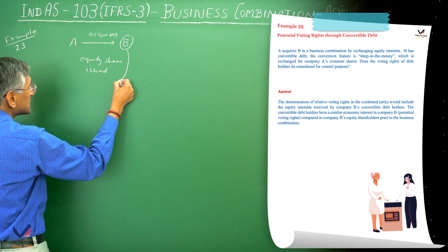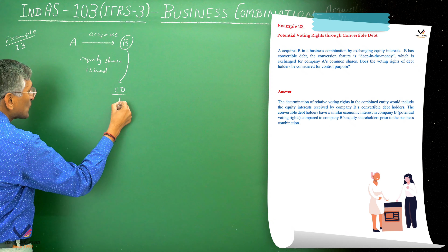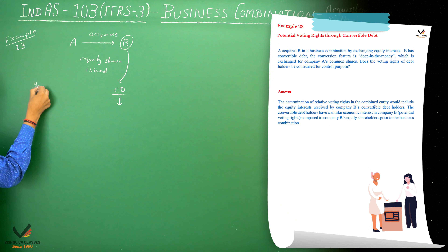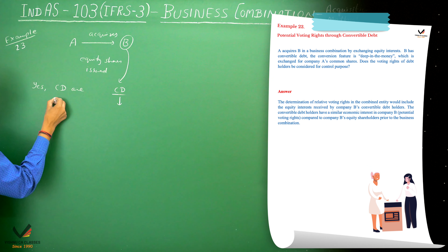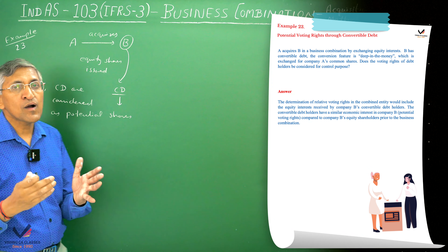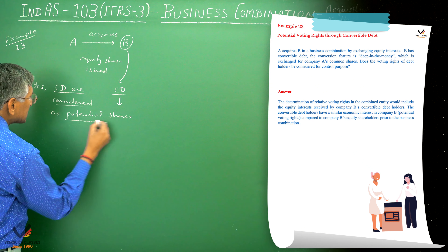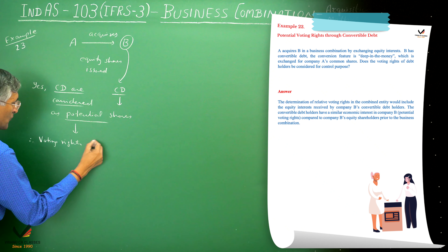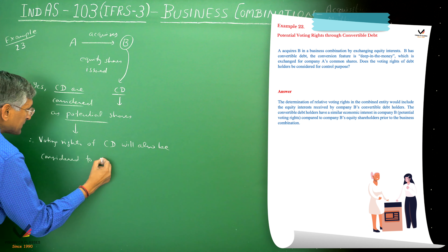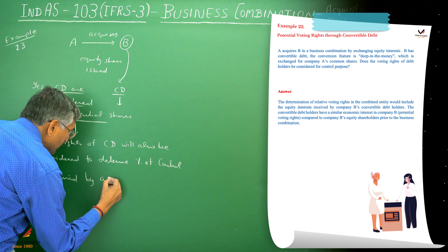In this case, B has convertible debt. In future, these can be converted to shares. Convertible debentures are considered as potential shares — that is, potential shares are issued in a future time period through conversion of debentures and through options. Therefore, voting rights of convertible debentures will also be configured to determine the percentage of control acquired by the acquiring company, which is also called the acquirer.